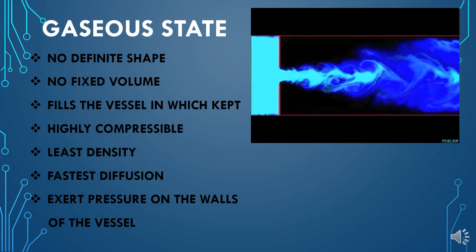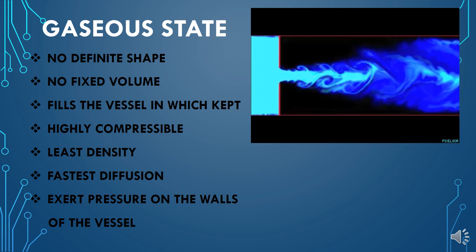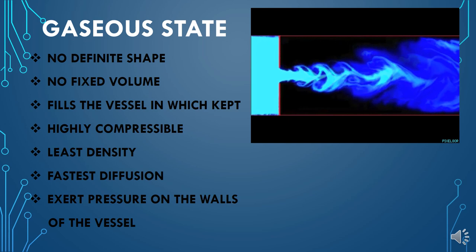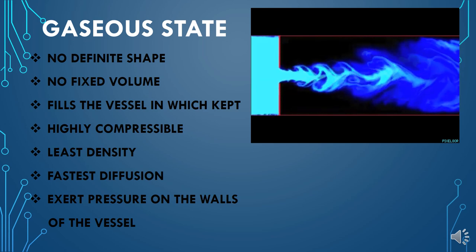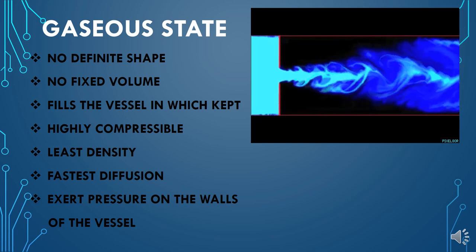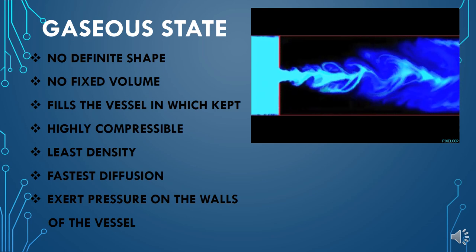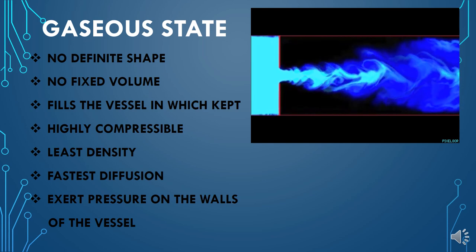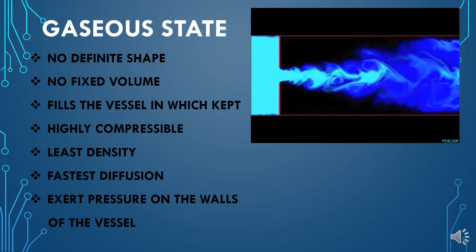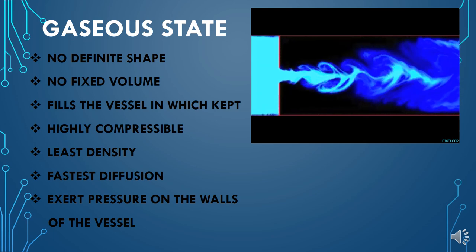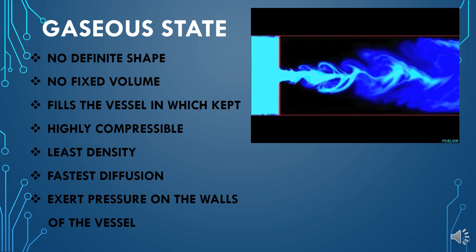In the gaseous state, gases have no definite shape. Wherever you provide space, gases occupy all of it because particles are free to move around at very fast speeds. Gases have neither a definite shape nor a fixed volume — they fill the entire vessel in which they are kept. For example, if you take 1 liter of gas and put it into a 10-liter vessel, it will occupy 10 liters, because gas particles do not experience any force of attraction and hence cannot be confined within boundaries. They are free to move and fill the entire space provided.